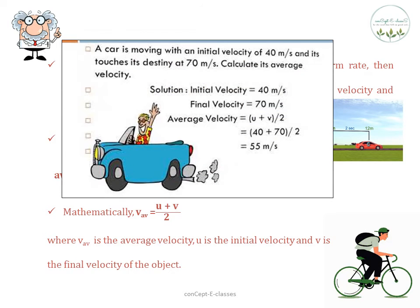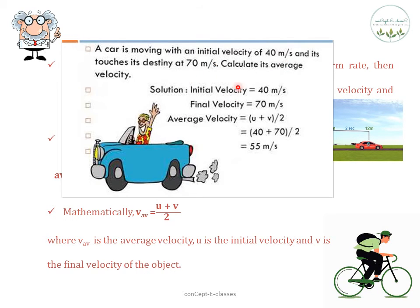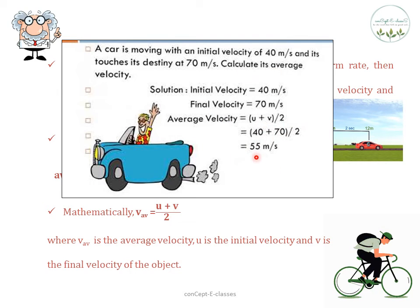Let us see a problem. A car is moving with an initial velocity of 40 m/s and it reaches its destination at 70 m/s. Calculate its average velocity. Initial velocity u = 40 m/s, final velocity v = 70 m/s. Average velocity = (u + v) / 2 = (40 + 70) / 2 = 55 m/s. This is how we measure the rate of motion with and without direction.